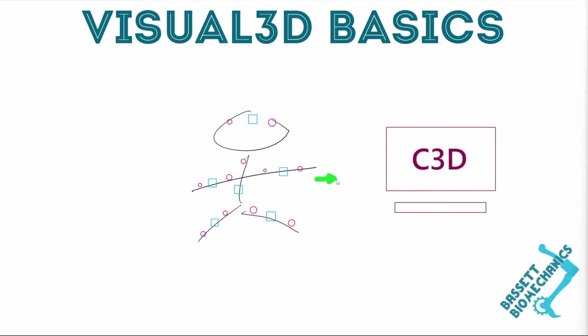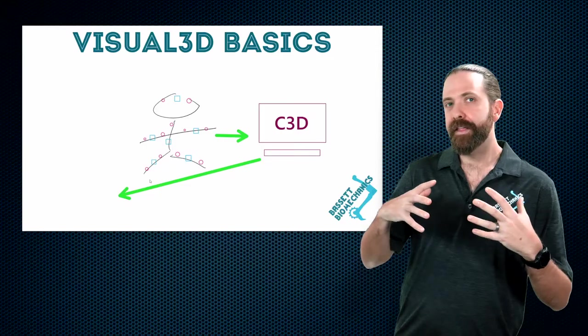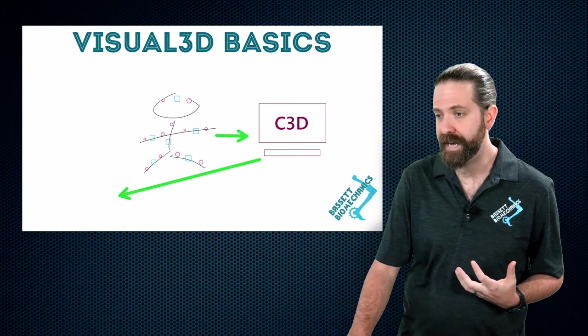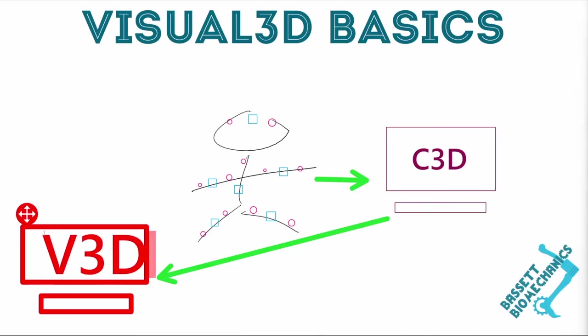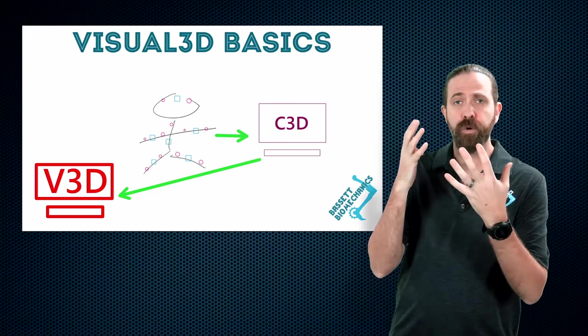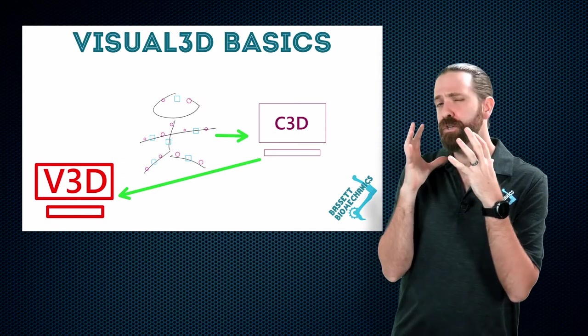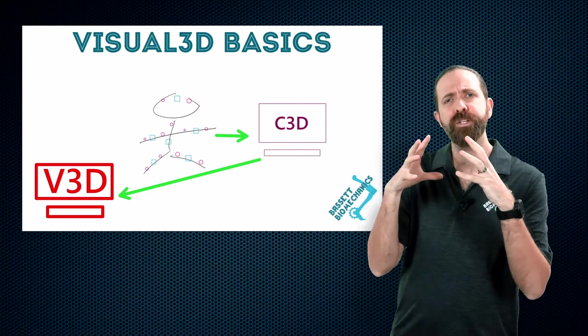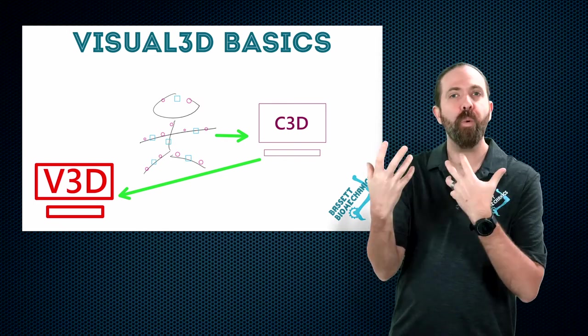So you get your motion into your computer and from your computer you are going to export that C3D file that may or may not end up in the same computer as we discussed, but you will have a computer that is running Visual 3D. And in Visual 3D we are going to build biomechanical models together, we are going to perform calculations using these biomechanical models, and we're going to build pipelines.